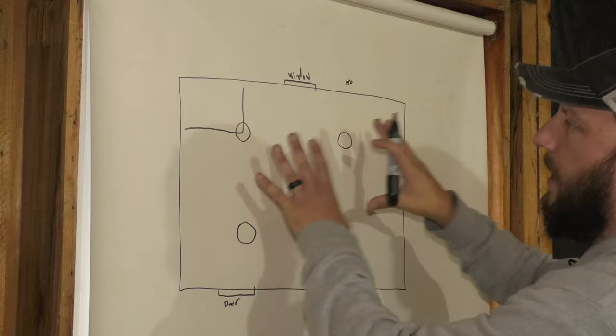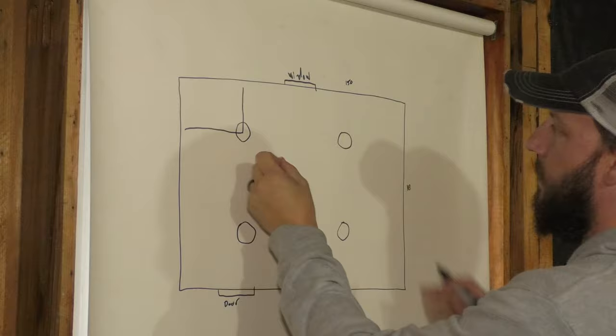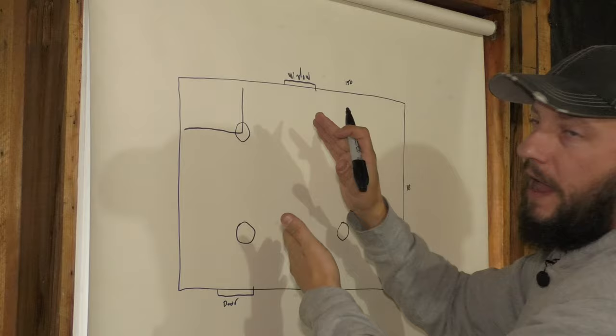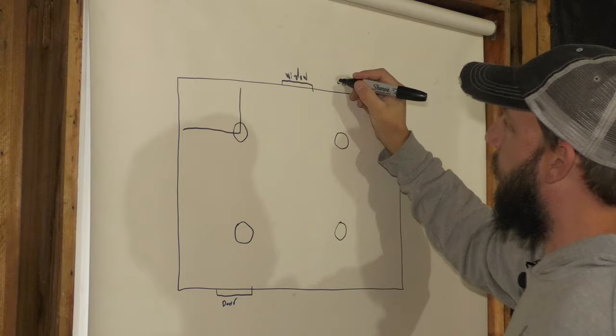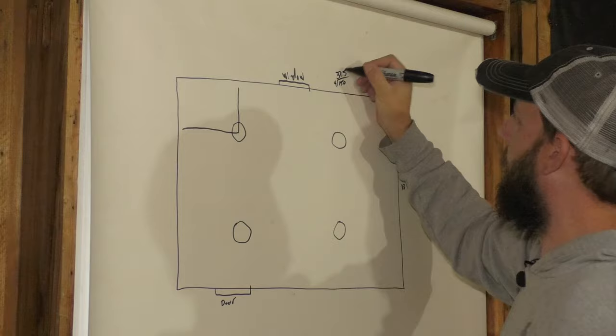So now you have the number of lights that you want. You take the number of lights that you're using in this row. I'm using two. You double that and then you use that number four. You divide 150 by four and you'll get 37.5.